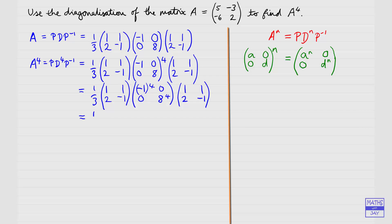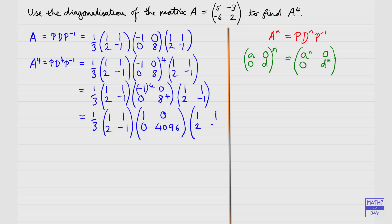So that gives us: the first matrix stays the same, negative one to the power of four is one, the zeros stay as they were, and eight to the power of four is 4096. The final matrix P^(−1) stays as it was.